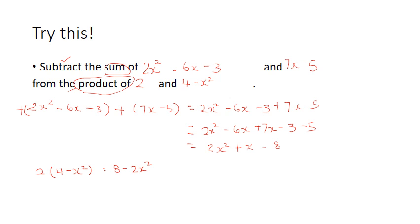So, now, we have to subtract this from this. Which means that 8 minus 2x squared comes first in the working. So, 8 minus 2x squared minus 2x squared plus x minus 8. Now, let's open the brackets.